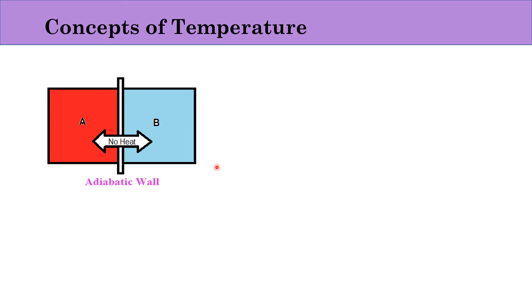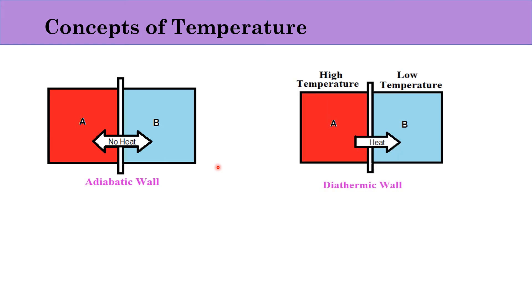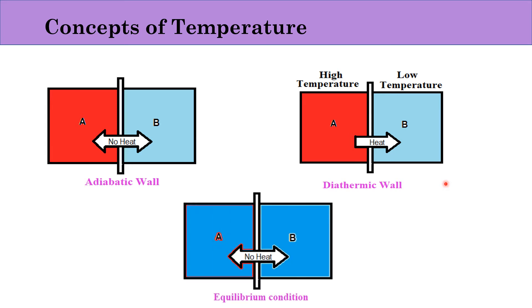Now let us replace this adiabatic wall with a diathermic wall. A diathermic wall is a wall which allows heat transfer. We observe that there will be rapid heat transfer from the higher temperature body to the lower temperature body. Finally, changes stop and both systems come to an equilibrium state where there is no further heat transfer and the temperatures of both bodies will be the same.